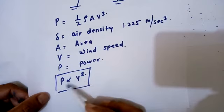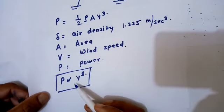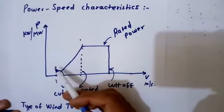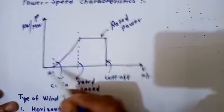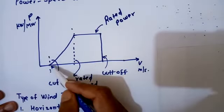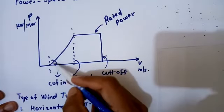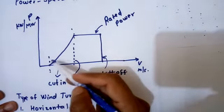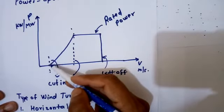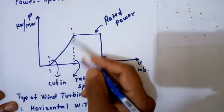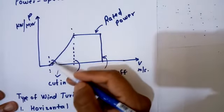So we can see here the power-speed characteristics, which is very important. We can see the starting point is called the cut-in speed. Here, the power generated in the wind turbine follows the parabolic cubic expression, so it will have this characteristic.